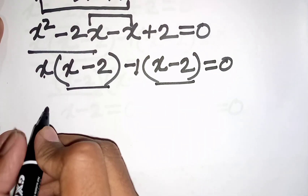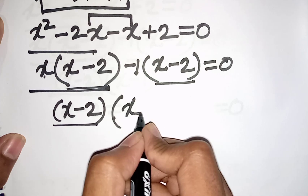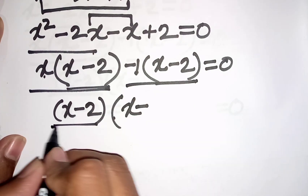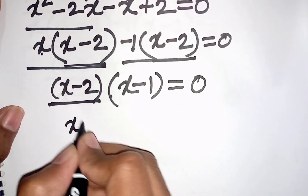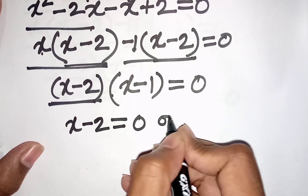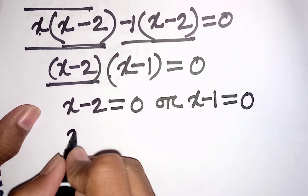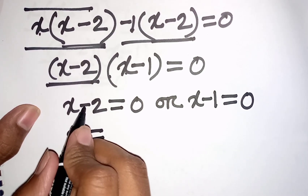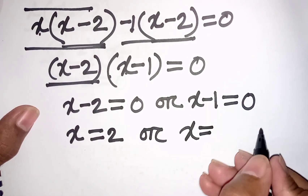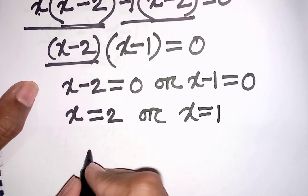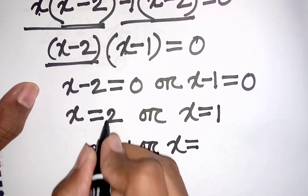We see (x - 2) is common, so we factor it out: (x - 2)(x - 1) = 0. This gives x - 2 = 0 or x - 1 = 0, so x = 2 or x = 1. Our final answer is x = 1 or x = 2.